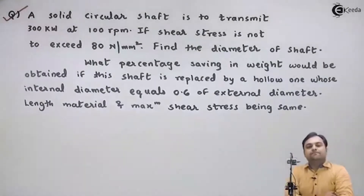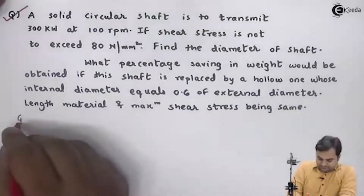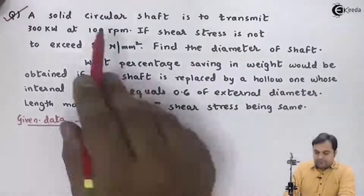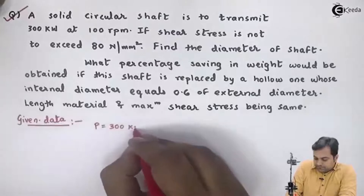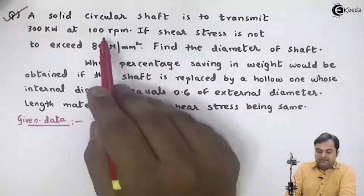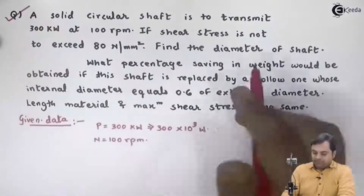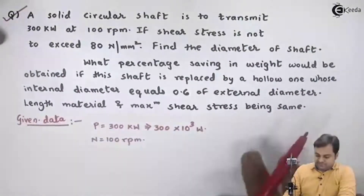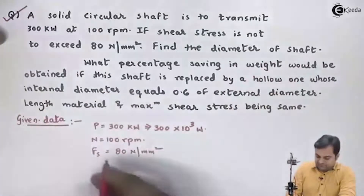This is the question in front of us, in which at first there is a solid shaft, then it is replaced by a hollow shaft, and we have to find how much is the percentage saving in weight when shifting from solid to hollow shaft. Let us write the data: power is 300 kilowatts, which is 300×10³ watts, at 100 rpm. The shear stress is not to exceed 80 Newton per mm square.